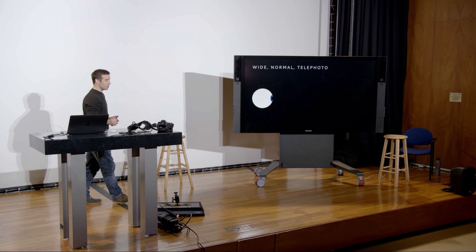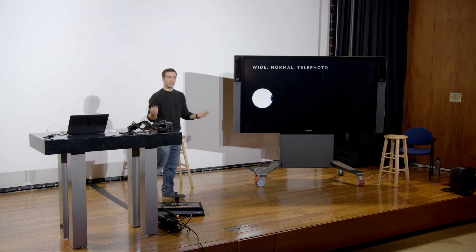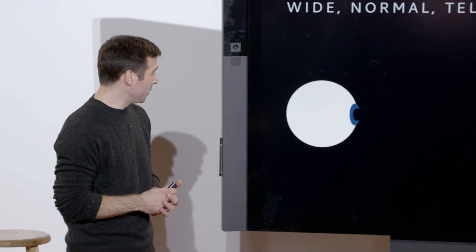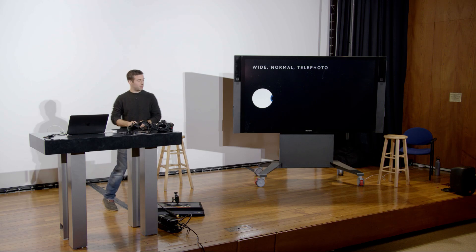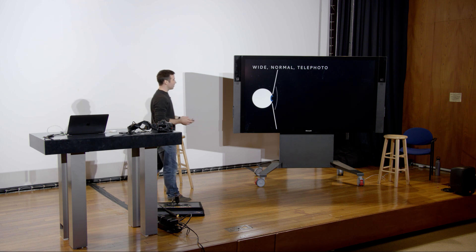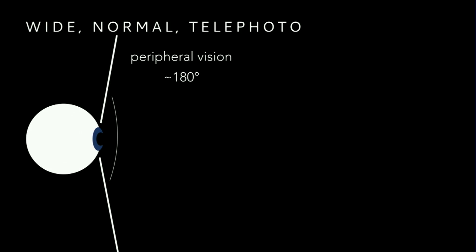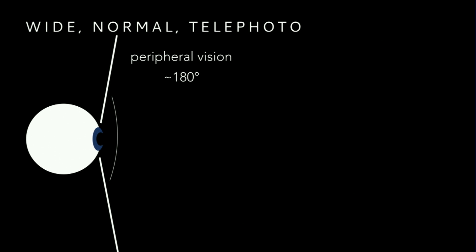There are three categories we define lenses in: wide angle, normal, and telephoto. Thinking about what we see with the human eye — we have a peripheral vision of about 180 degrees, but we can't focus on everything at once. The area we can actually focus on is called foveal vision, and it's about 40 degrees wide, which is pretty narrow.